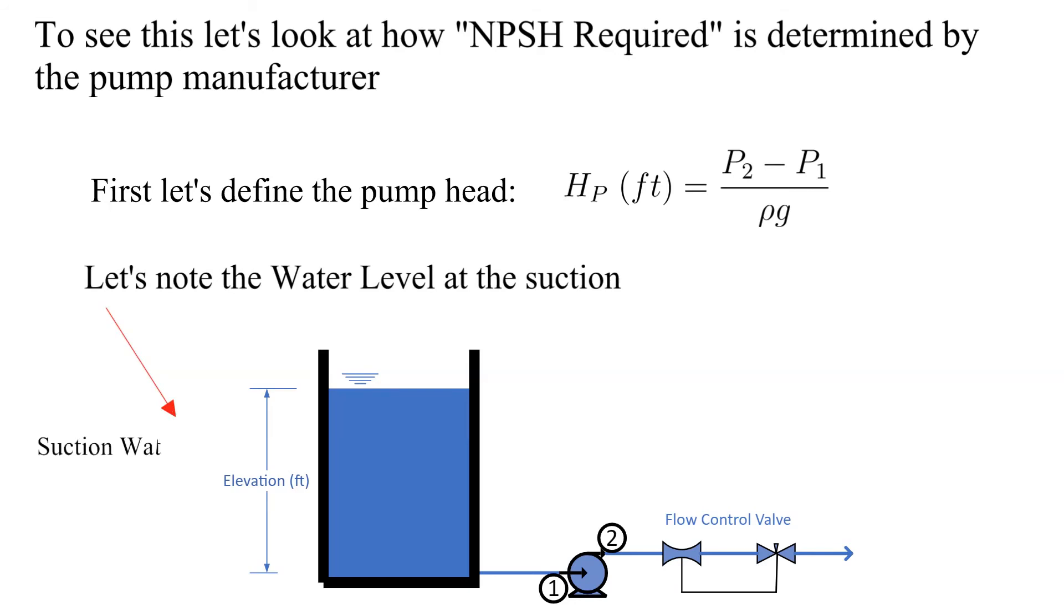Now let's look at the test rig. A tank provides net positive suction head to the pump being tested. All piping losses etc. are known so the absolute stagnation pressure is known at the pump suction. A series of tests are conducted. A flow control valve maintains the same flow for each test. Each consecutive test has a lower water level in the tank. The pump head is measured for each test.